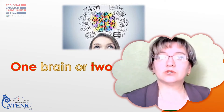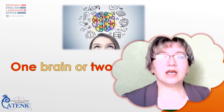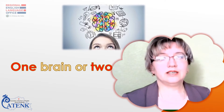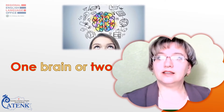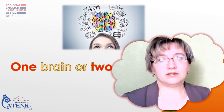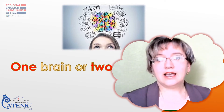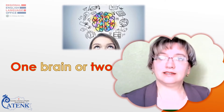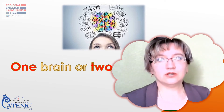You will read the text 'One Brain or Two.' Look at the title. What do you think the text is going to be about? As you know from biology lessons, our brain is divided into two hemispheres, left and right. Each hemisphere controls different parts of our body and is responsible for our different skills. Let's read the text to find more information on the topic.